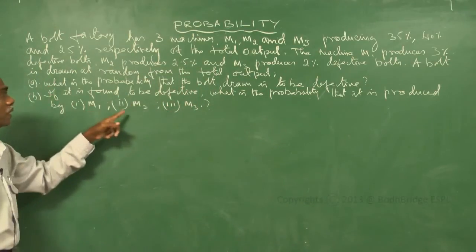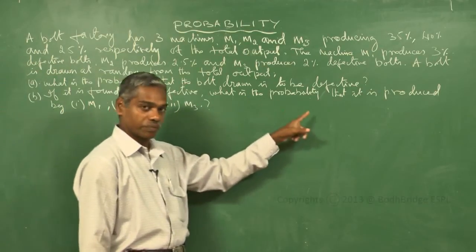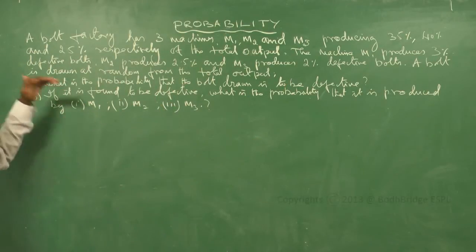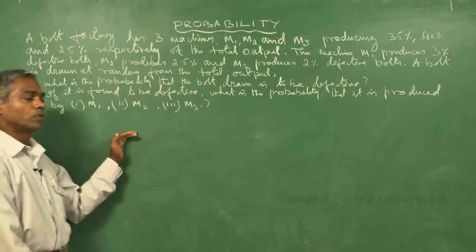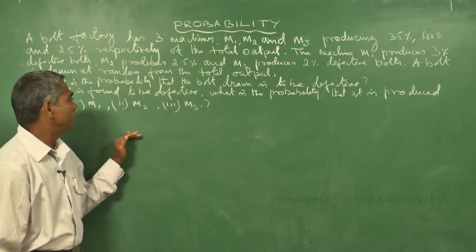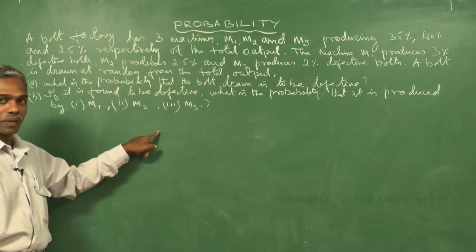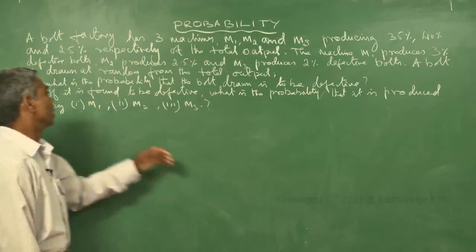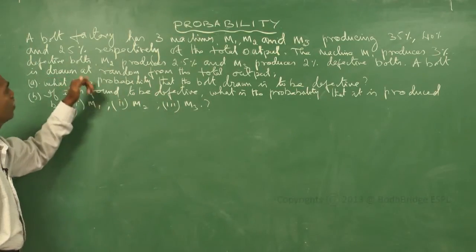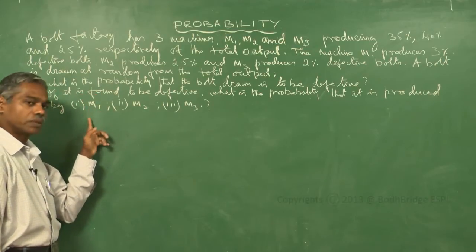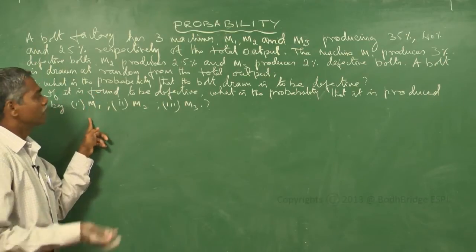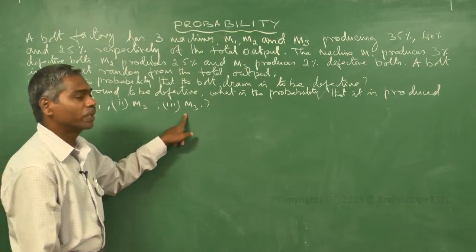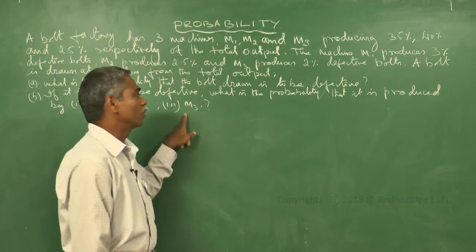What is the probability that the bolt drawn is defective? For the second question, if we find that it is a defective bolt, it may be produced by any one of the 3 machines. We want the probability that the defective bolt found is produced by machine M1. If it is produced by machine M2, what is the probability? And if it is produced by M3, what is the probability?